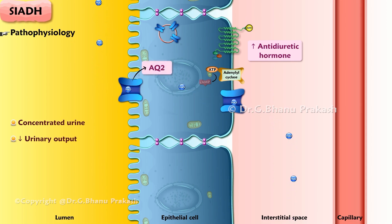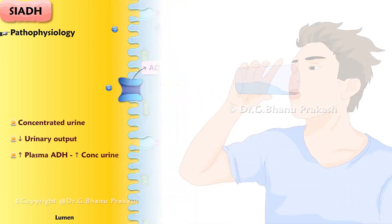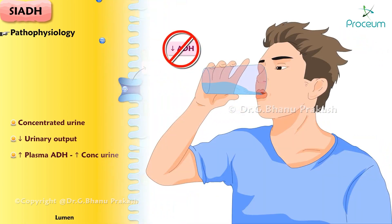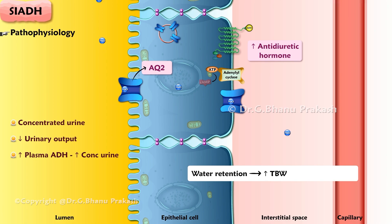The higher the plasma antidiuretic hormone, the more concentrated the urine. In most patients with SIADH, ingestion of water does not adequately suppress antidiuretic hormone and the urine remains concentrated. This leads to water retention, which increases total body water. This increase in total body water lowers the plasma sodium concentration by dilution.